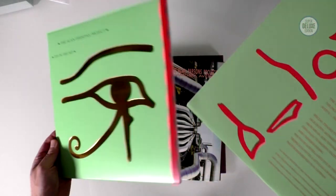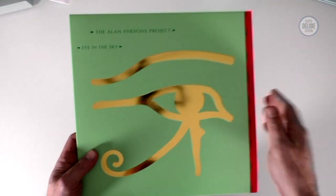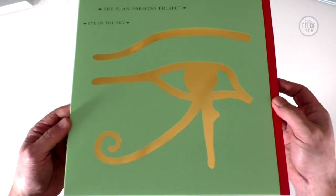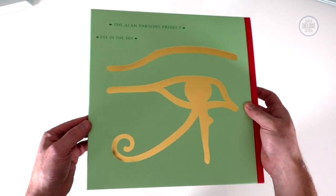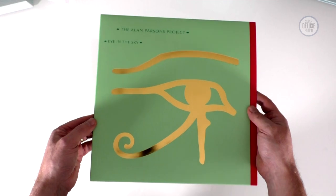These are all half speed mastered albums. There's quite a lot of detail in the book about the sources, where they've taken from, the effort that they went to to try and get the very best possible tapes, original tape sources.